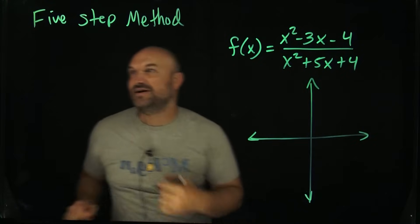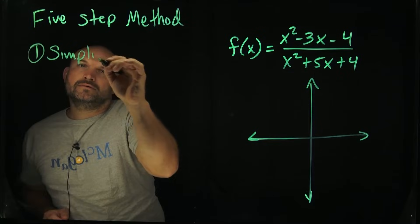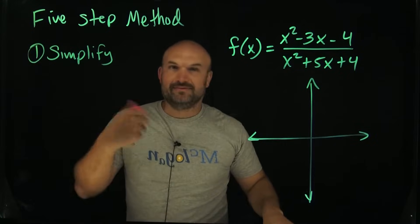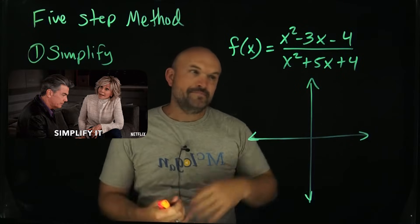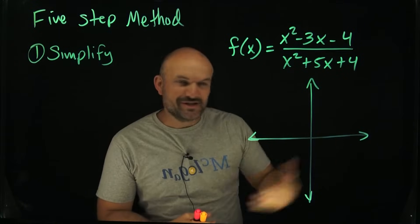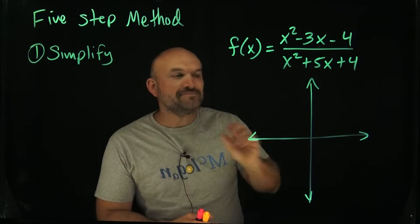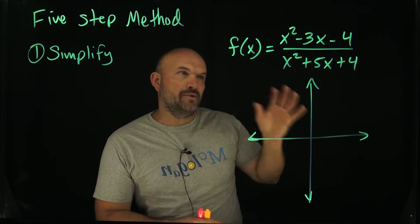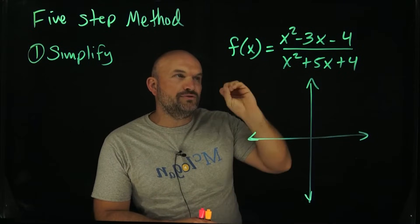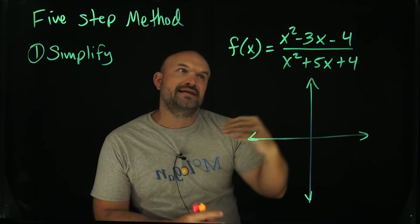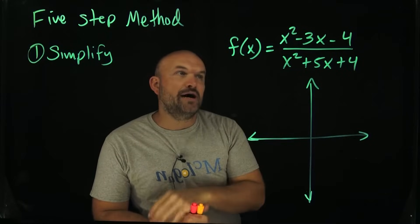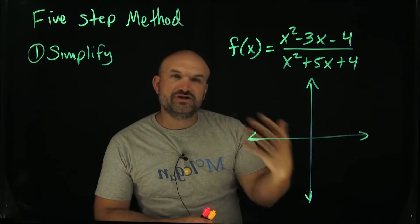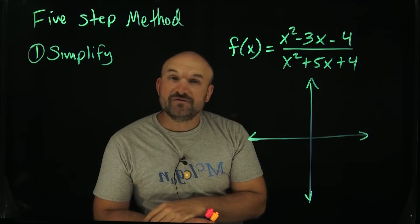I'm sure you guys are pretty used to this. Your teacher probably tells you over and over again: make sure you simplify. As people involved with math, math can get pretty complicated. So one of the things to always do is look at a problem and try to say, how can I look at this in a simpler format? What's also going to help us when we're simplifying is it's going to help us identify the certain characteristics that we're looking for in a rational expression.